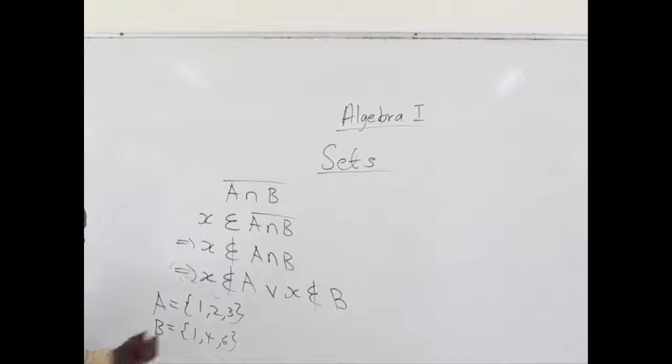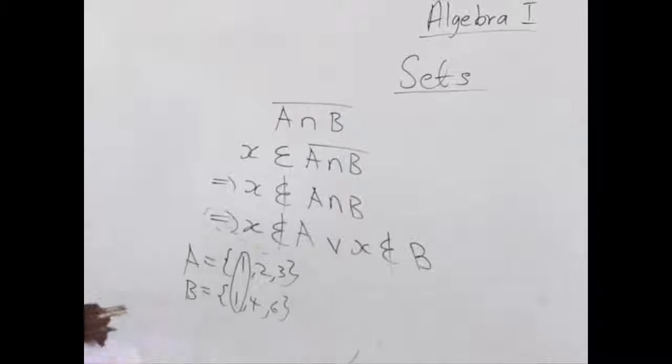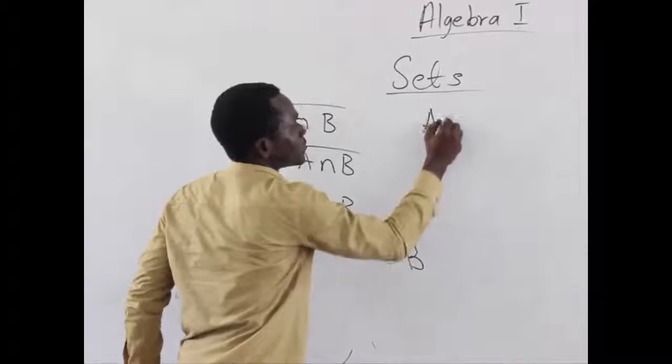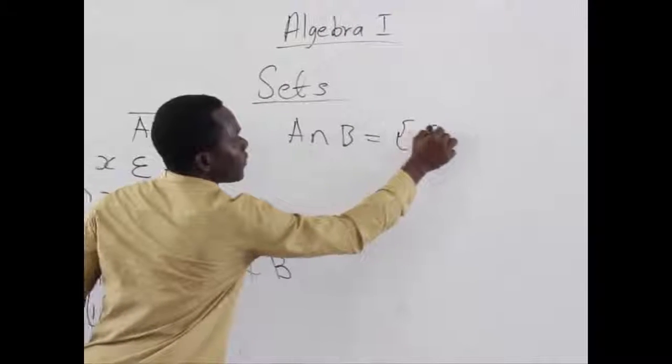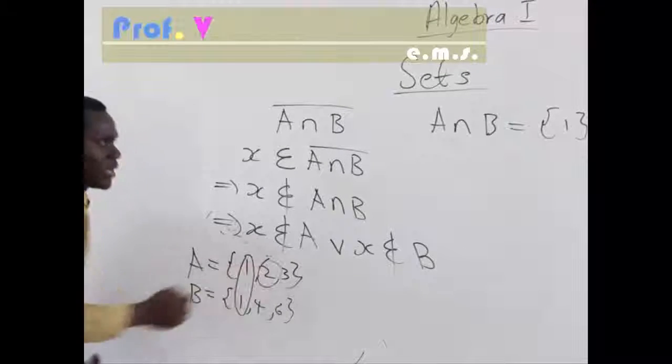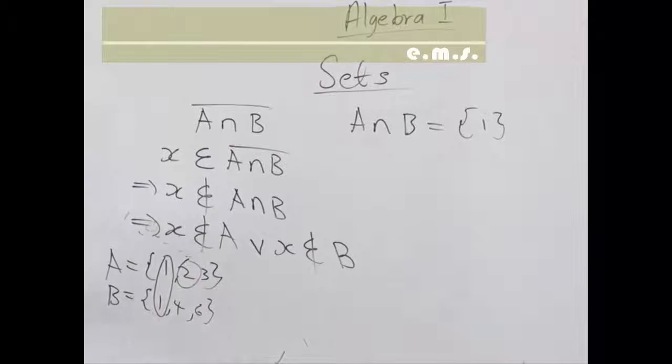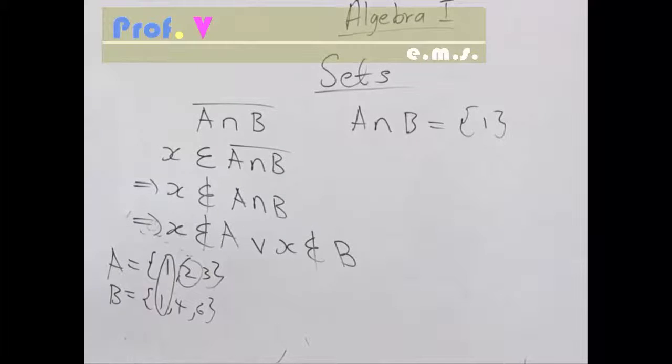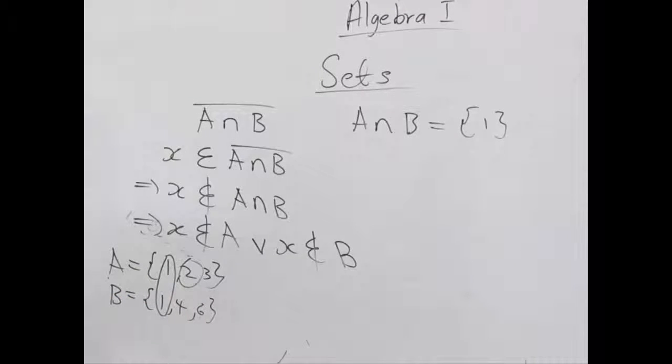We can see that they have the element 1 in common, but they do not have the others in common. So we can see that A intersection B here will give us the set of element 1. So when we pick 2, 2 does not belong to this set, but does it mean 2 is not belonging to any other set? No. You can see that 2 belongs to only A, but at that same time, it does not belong to B.